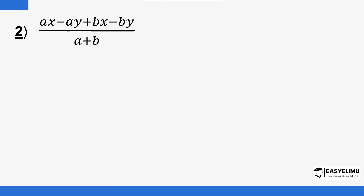Here is another example. We are going to factorize the numerator by grouping. You can see there is a common factor — we can pair terms: a is common in the first pair, and b is common in the second pair. If you factorize the first pair, the common factor is a. Then we divide each term by a: a·x divided by a is x.